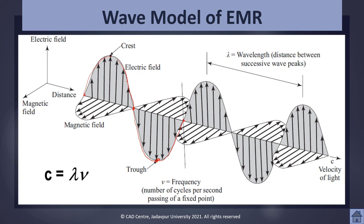The length of one complete wave is called wavelength. The point of positive maxima is known as the crest and the point of negative maxima is called the trough. Wavelength can also be measured as the crest-to-crest distance or the trough-to-trough distance.